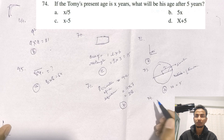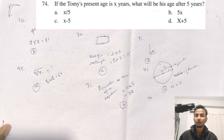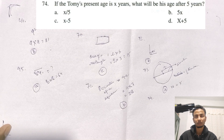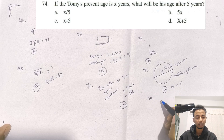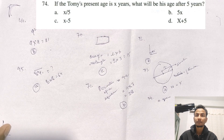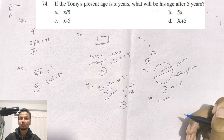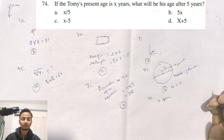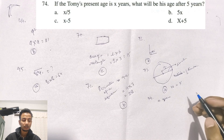The next question is 74. If Tony's present age is X, what will be his age after 5 years?